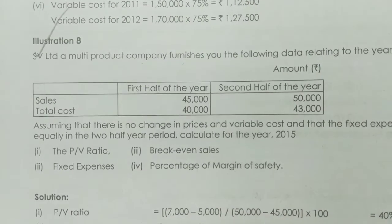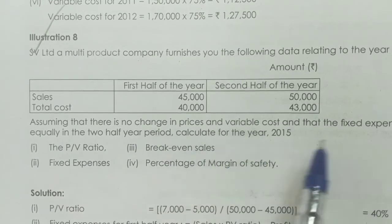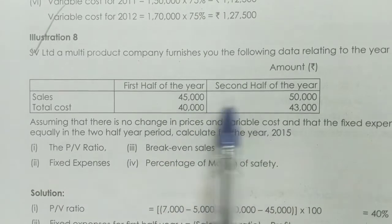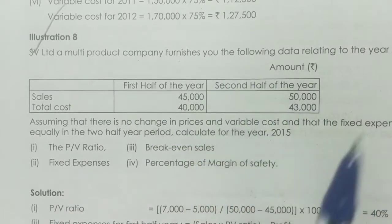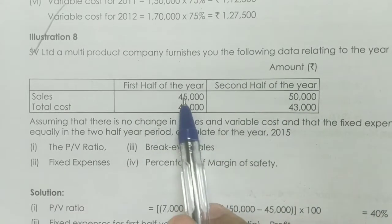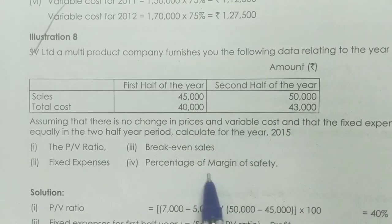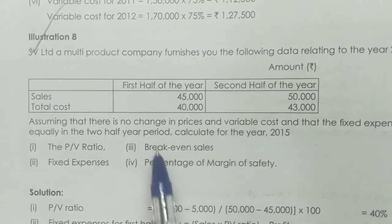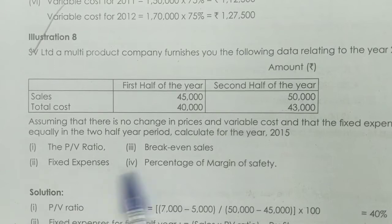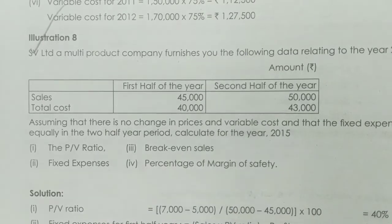Calculate for the year 2015. Prices and variable cost are the same — that is why fixed expenses are equal in both periods. For example, in the first half of the year $20,000 is fixed cost, and in the second half of the year $20,000 is also fixed cost. We need to find the PV ratio, fixed expenses, break-even sales, and percentage of margin of safety.